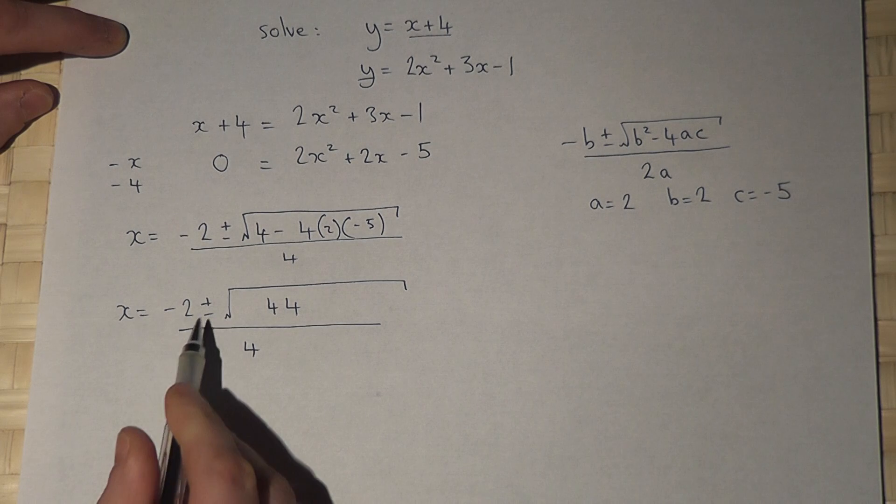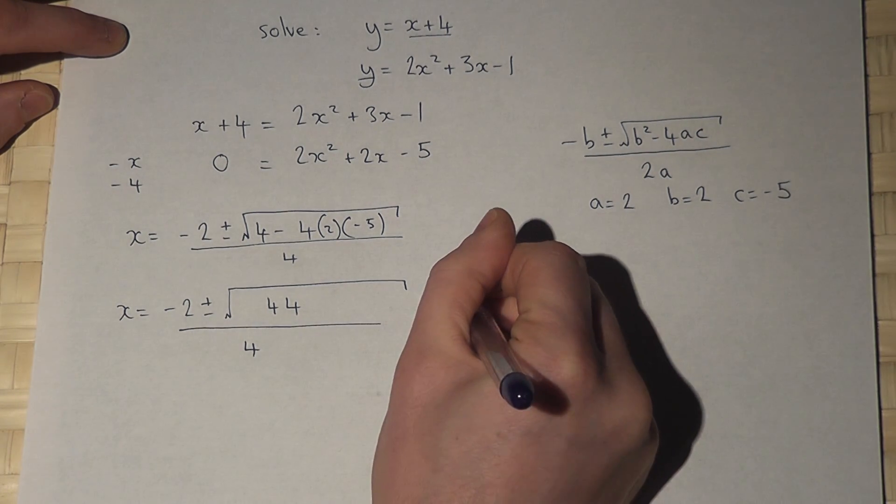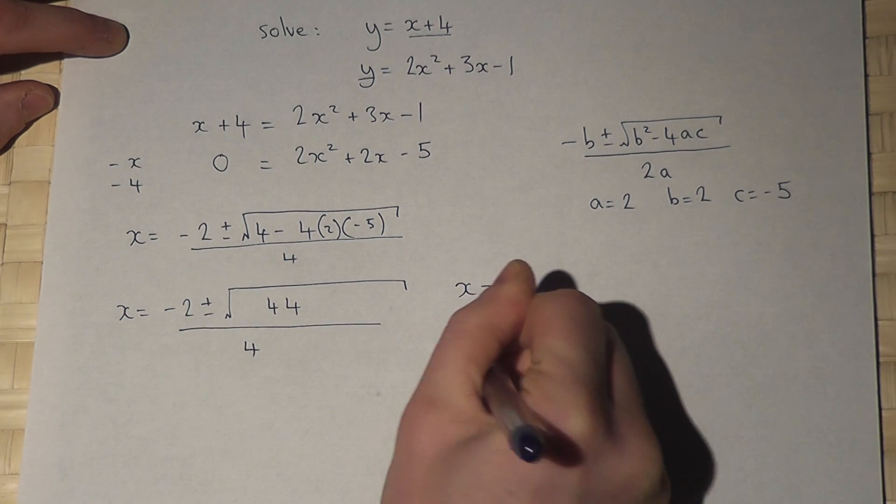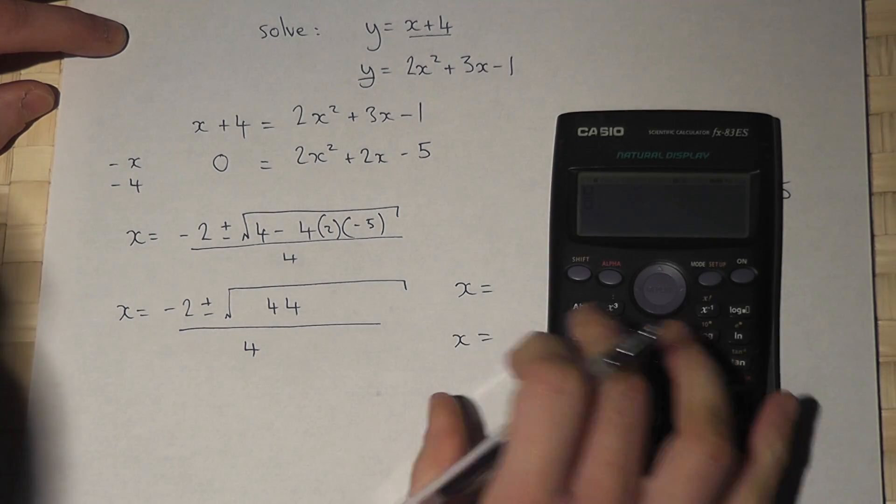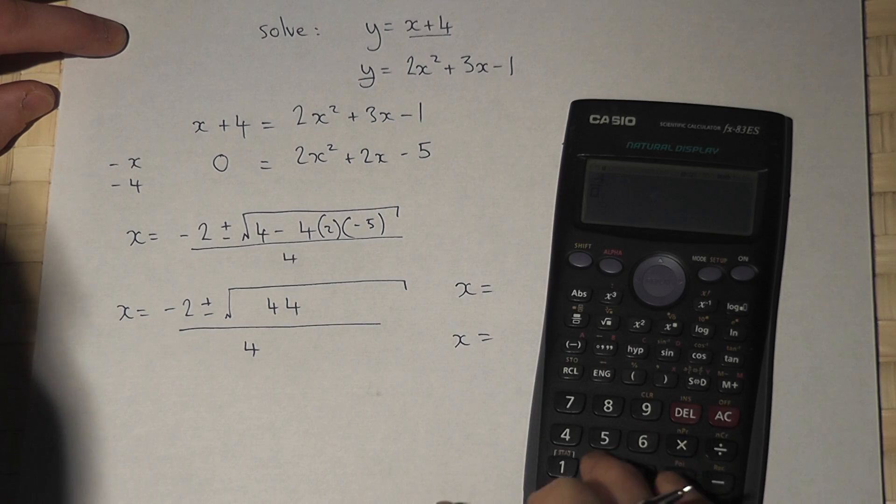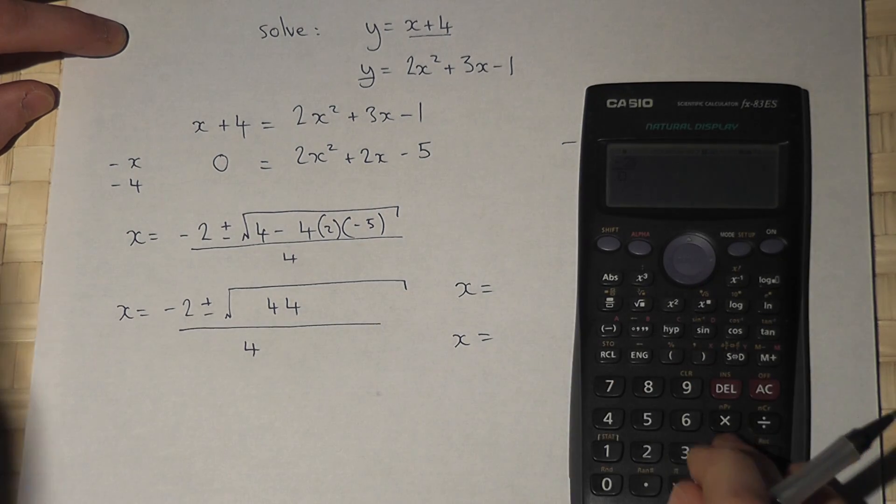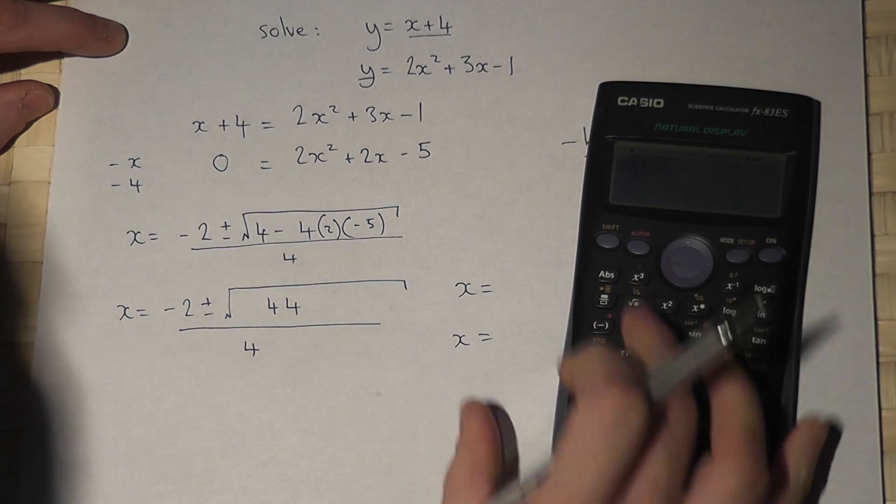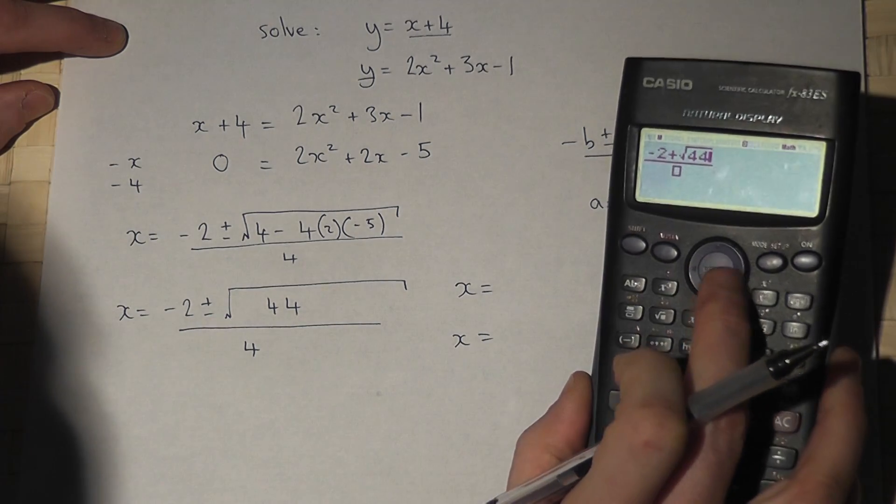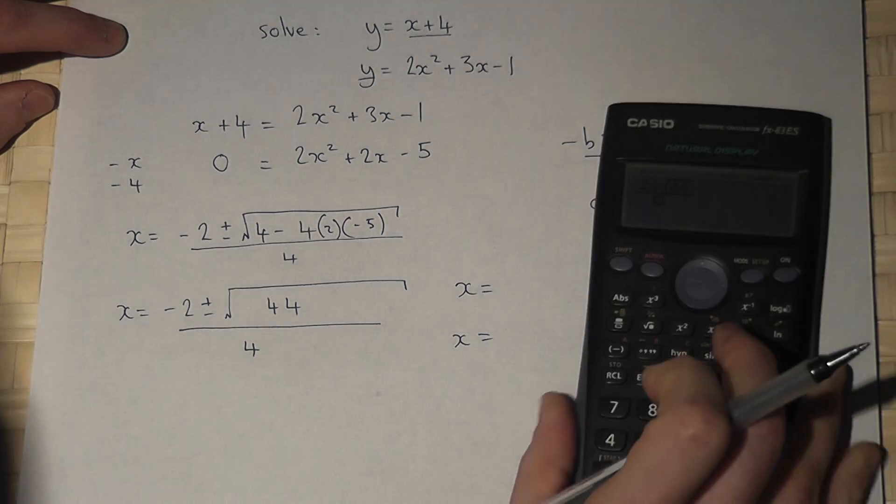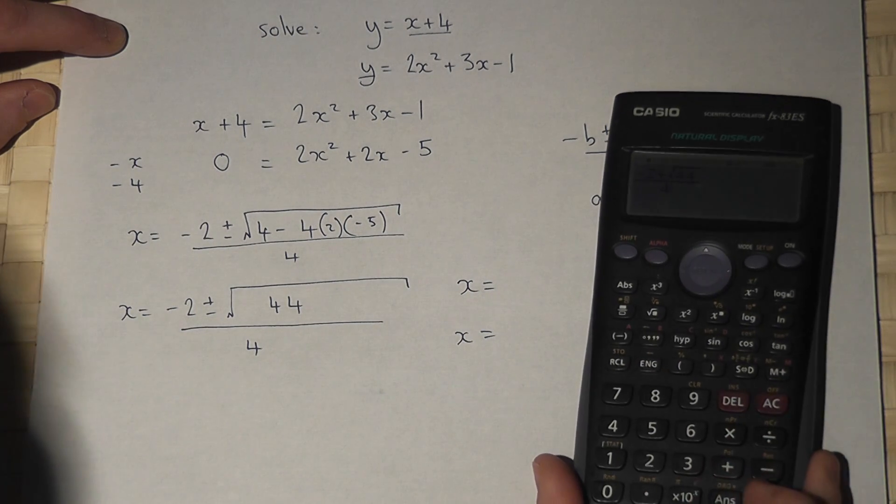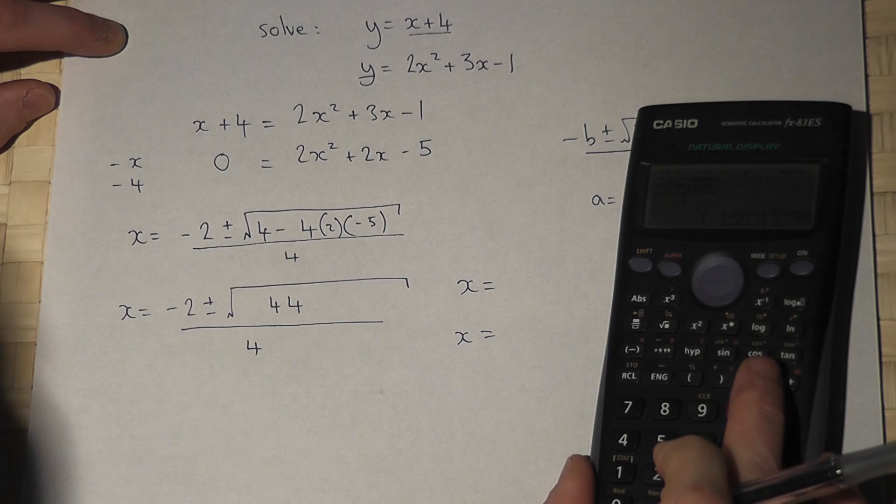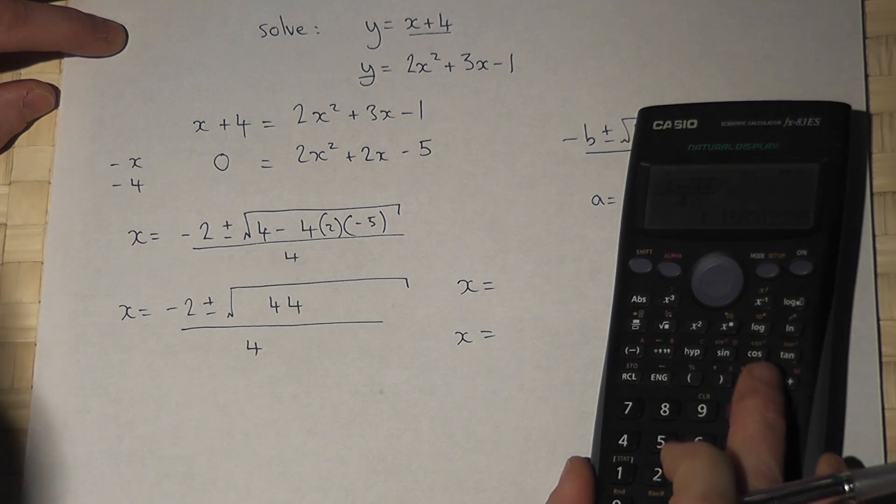So I can now work out 2 values for x. Using my calculator. So, fraction button, minus 2. I do the plus 1 first, plus root of 44, and then divide by 4. So minus 2, plus root 44, over 4, gives me the answer of 1.16.